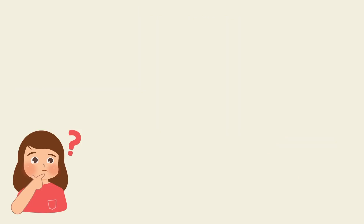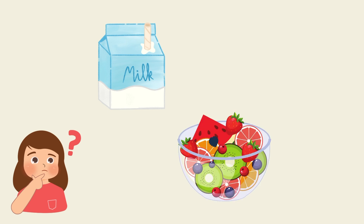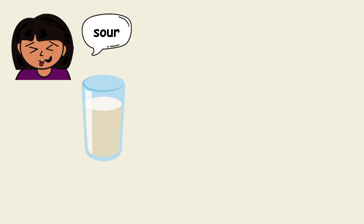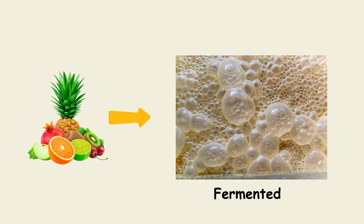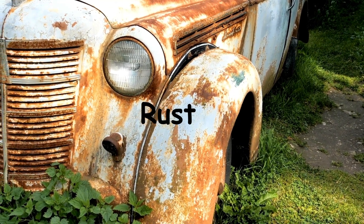Have you ever wondered what happens if milk is left at room temperature during summer? Or what happens to fruits when they are kept in the open? Or when an iron nail is exposed to a humid environment? In all the cases, the property of the substance changes — milk gets sour due to oxidation reaction and growth of microorganisms, fruits get fermented when kept in the open for a long period of time, and iron goes through rusting when exposed to a humid environment.